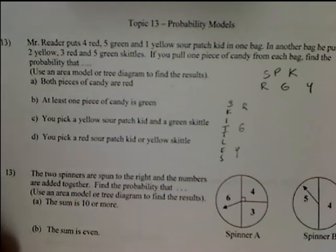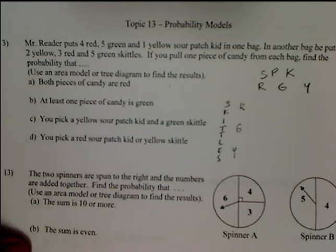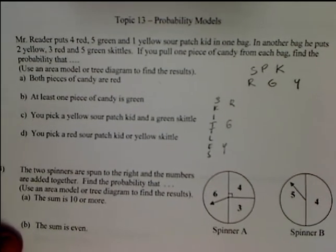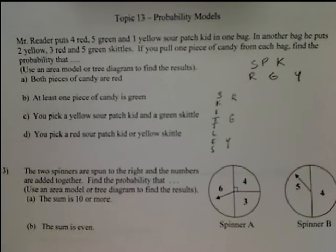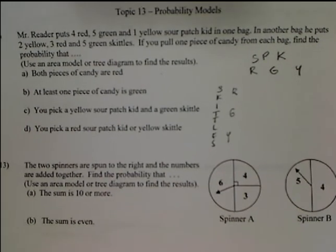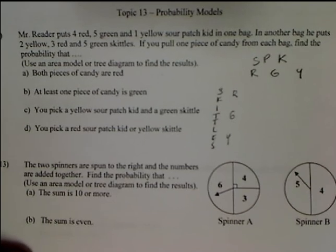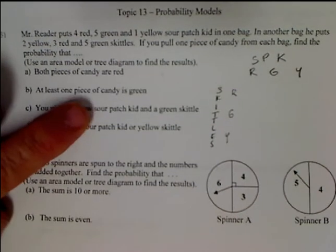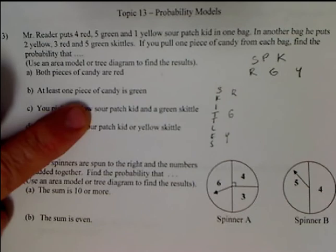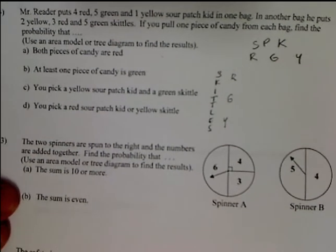This is on probability models. If you're doing correctives for this problem, you need to print out this page that's connected with the videos. We're going to go through three different types of probability models: the first one is going to be an area diagram. I'm going to do the first one here, and then you will try to do the one underneath it.